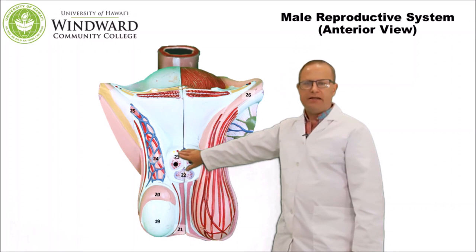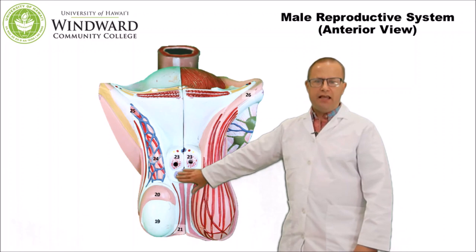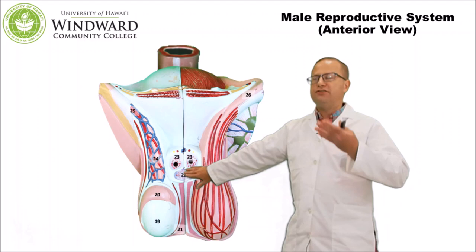The two bodies up top are the corpora cavernosa — large bodies of erectile tissue that help the penis become erect during sexual intercourse. Right below that is the urethra, surrounded by the corpora spongiosum, which helps hold the urethra open during ejaculation.